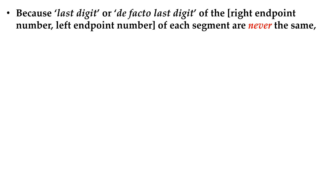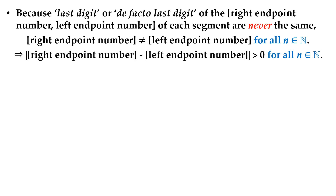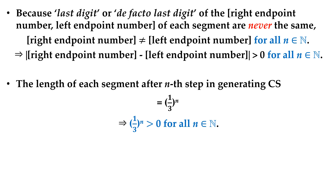Because the last digit or de facto last digit of the right endpoint number and left endpoint number of each segment are never the same, the left endpoint number is not equal to the right endpoint number for all n. Thus, absolute value of right endpoint minus left endpoint is larger than 0 for all n. The length of each segment after the nth step in generating the Cantor set is (1/3)^n, which is larger than 0 for all n.